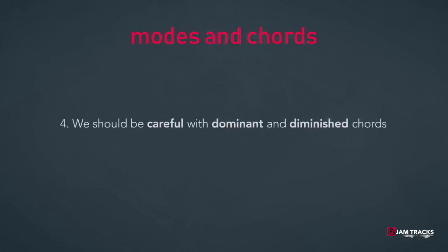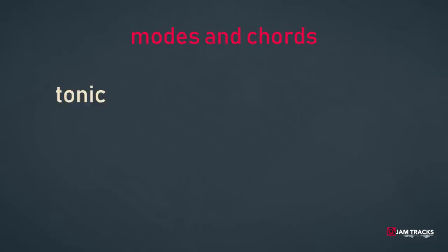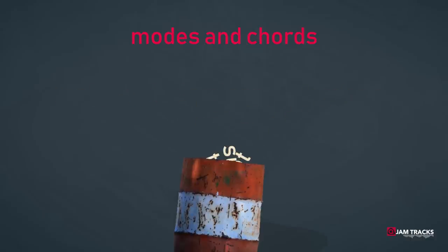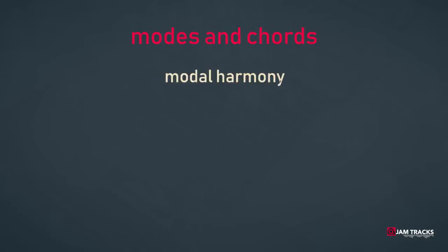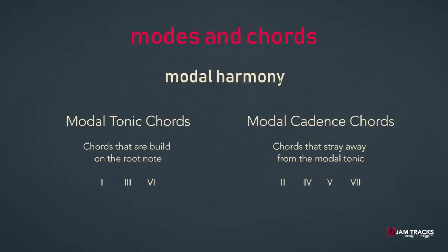We should be careful with the dominant and diminished chords, since they bear the tritone and want to resolve to their relative tonic. In modal harmony, each chord seems to float by itself as a standalone entity, not feeling the need to resolve into the tonic. It's a good idea to use chords that sound a little vague, like sus chords and added nine chords. We also need to ditch the tonal naming conventions like tonic, subdominant, and dominant. Instead, we divide the chords into two groups: modal tonic chords — built on the root note — and modal cadence chords, which stray away from the modal tonic but return right away to the tonic.